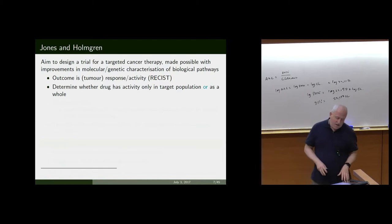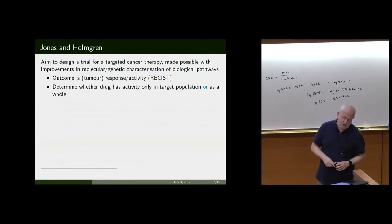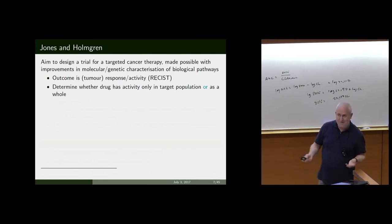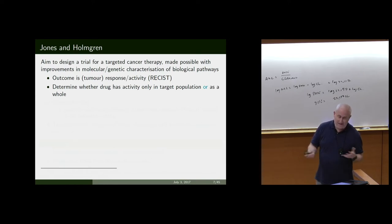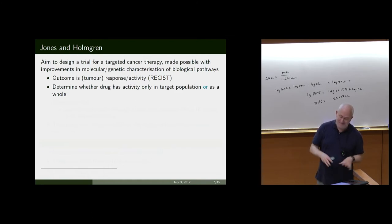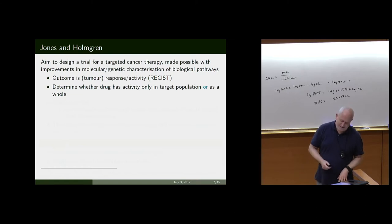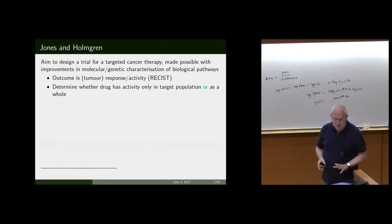The aim of this trial is generally, in the cancer field, a RECIST criteria where response or activity is what they're after. We've tried publishing papers to get people to use continuous tumour response, but it is quite hard to change practice. The aim is to determine whether the drug has activity in a target population or in the whole unselected population.